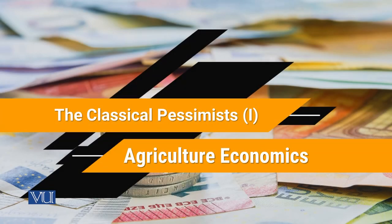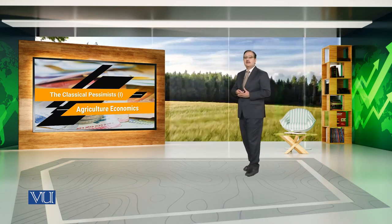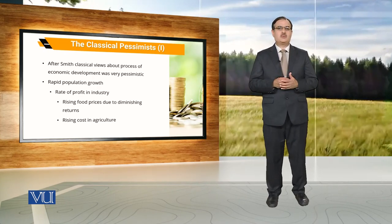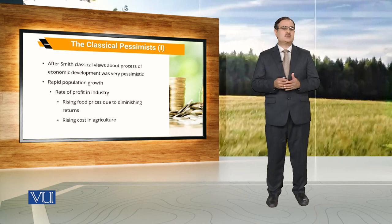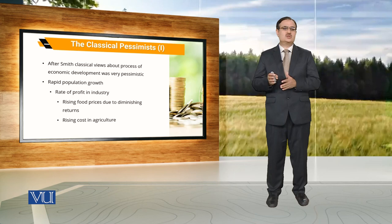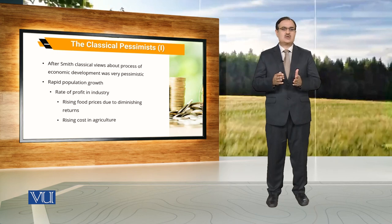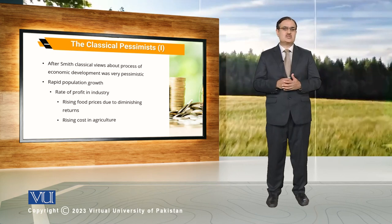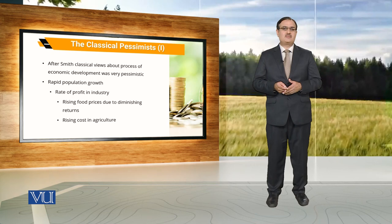When we talk about the classical pessimists, they basically highlight and mention the role of returns in the production process. After Smith, their view about the process of economic development is very pessimistic. Whenever there is rapid population growth, it exerts pressure on the rate of profit in industry, because of rising food prices due to diminishing returns and rising costs in agriculture.